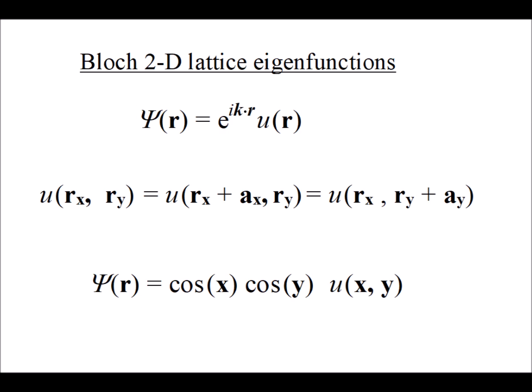In this video we want to display some examples of Bloch functions for a two-dimensional square lattice. These Bloch functions are the eigenfunctions of the two-dimensional Hamiltonian. We know from Bloch's theorem that these eigenfunctions have a particular form: psi of r equals e to the ikr times u of r. This u of r is special because it is periodic. Psi of r doesn't have to be periodic, and usually isn't, but u of r is.